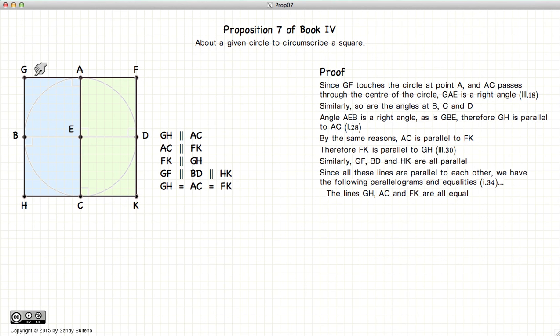The lines GH, AC and FK are all equal, according to Proposition 34 of Book 1. And similarly, the lines GF, BD and HK are all equal.